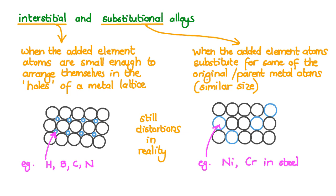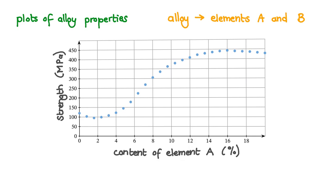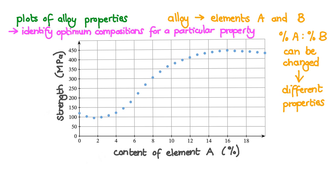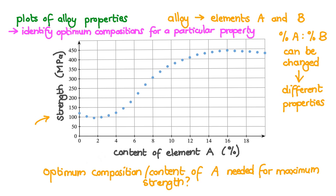We mentioned that the properties of an alloy depend on the relative proportions of the components. We can plot this kind of information on a graph. Let's have a look. Let's imagine an alloy consisting of elements A and B. The relative percentage of A as to the percentage of B can be changed and this will result in different properties for the alloy. This particular hypothetical graph shows how the content or percentage of element A in the alloy influences the strength of the alloy. And the strength is measured in megapascals. These kind of plots or graphs are very useful. They allow us to identify the optimum compositions of an alloy for a particular property. As we saw the particular property being investigated here is strength.